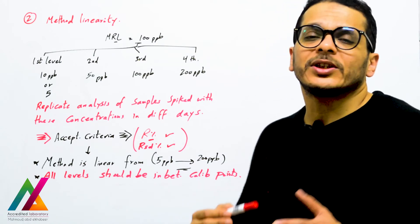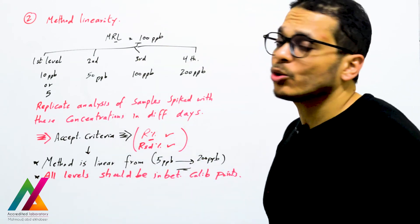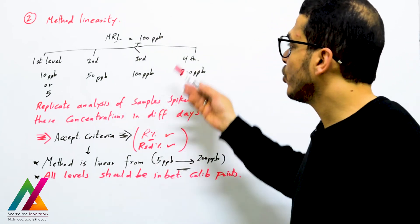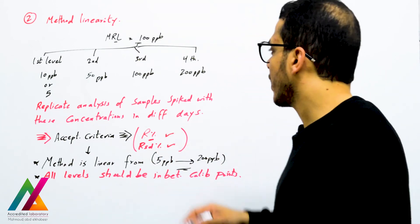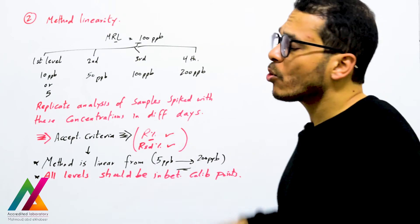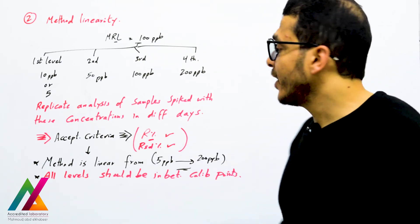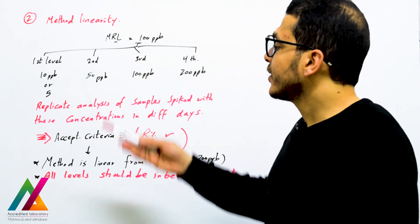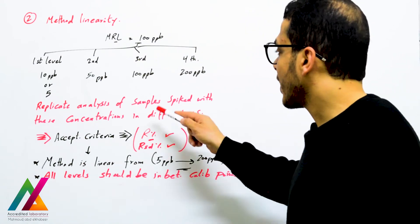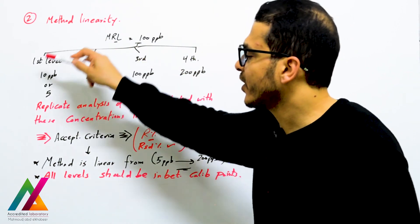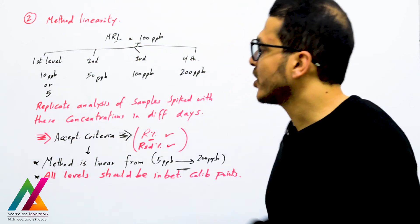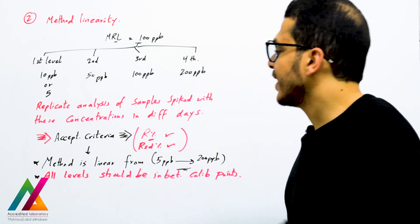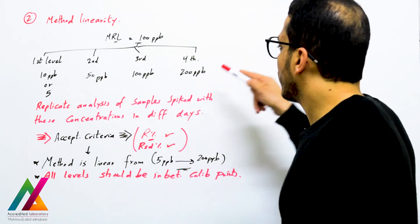For example, if the maximum residue limit is 100 ppb, you select levels such as 5 or 10 ppb as the lowest level representing the limit of quantitation, 50 ppb as a mid-level, 100 ppb at the specification limit, and 200 ppb or more as the highest level. You perform replicate analysis — 6 to 10 replicates — of spiked samples at these concentrations on different days.